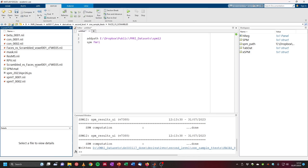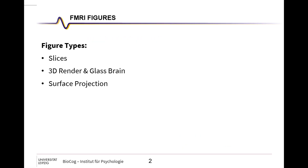Now SPM has created both images and we can use these as overlays in a program that can plot brain images. This is the main topic of today: how to plot fMRI figures. There are three main figure types: slices, 3D renders, glass brain images, and surface projections.